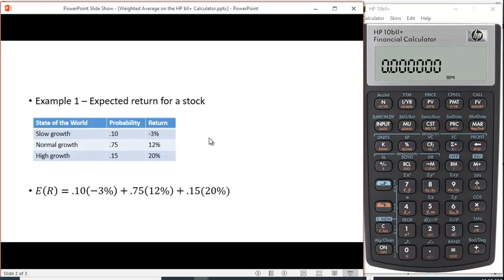Let's take a look at a common calculation. Sometimes we're interested in the expected return for a stock. We have a slow growth period which we estimate to be 10% probability and the return is minus 3% in that state of the world. We have normal growth which we think will be 75% of the time and the return is 12%, and a high growth period which is 15% probability and the return is expected to be 20%.